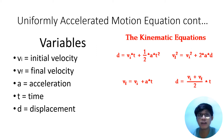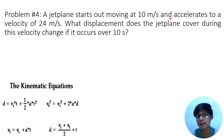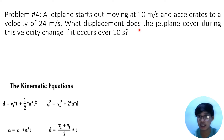Alright, let's continue solving problems using the four kinematic equations or uniformly accelerated motion equations. Now let's have problem number four. A jet plane starts out moving at 10 meters per second and accelerates to a velocity of 24 meters per second. What displacement does the jet plane cover during this velocity change if it occurs over 10 seconds?